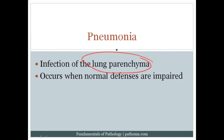Damage to the mucociliary escalator increases pneumonia risk. For example, a viral pneumonia damages respiratory epithelial cells, eliminating the escalator and increasing the risk of a superimposed bacterial pneumonia. Mucus plugging also increases risk — whenever you block a tube, the general pathology principle is that you get infection behind the block, so mucus plugging blocks an airway and increases infection risk distal to that blockage.